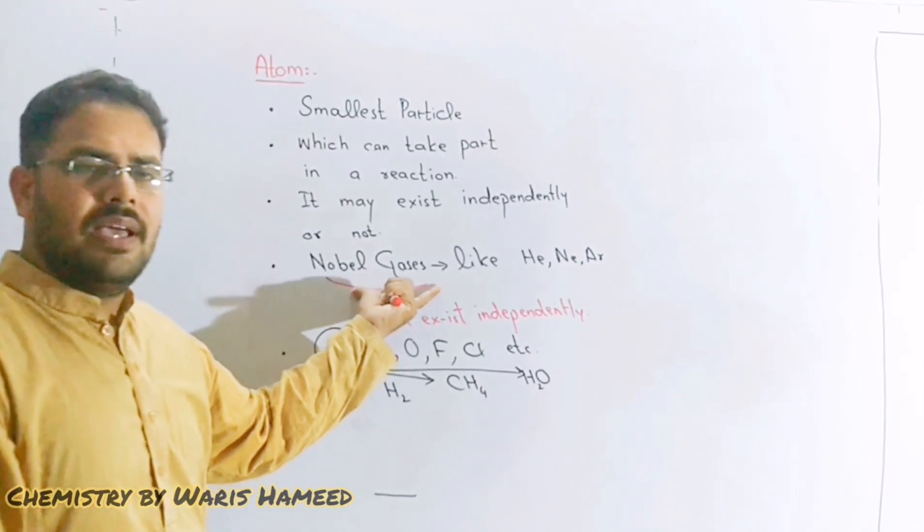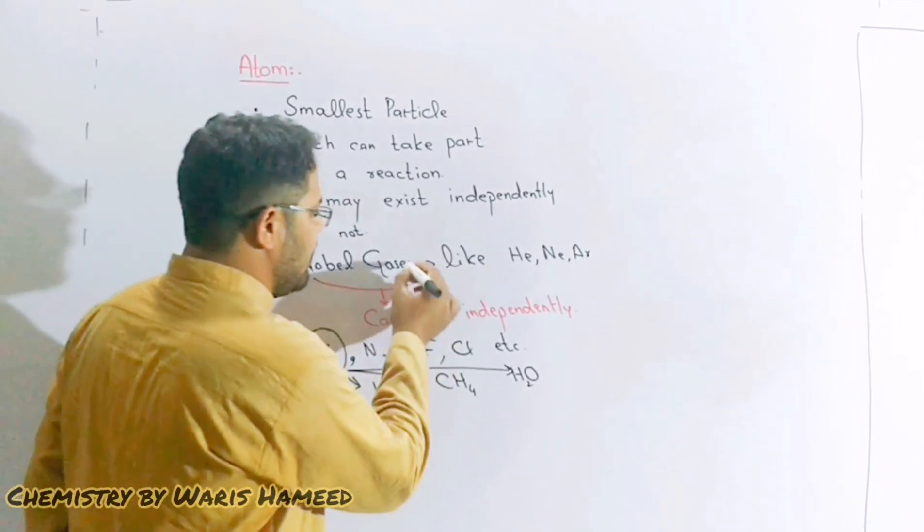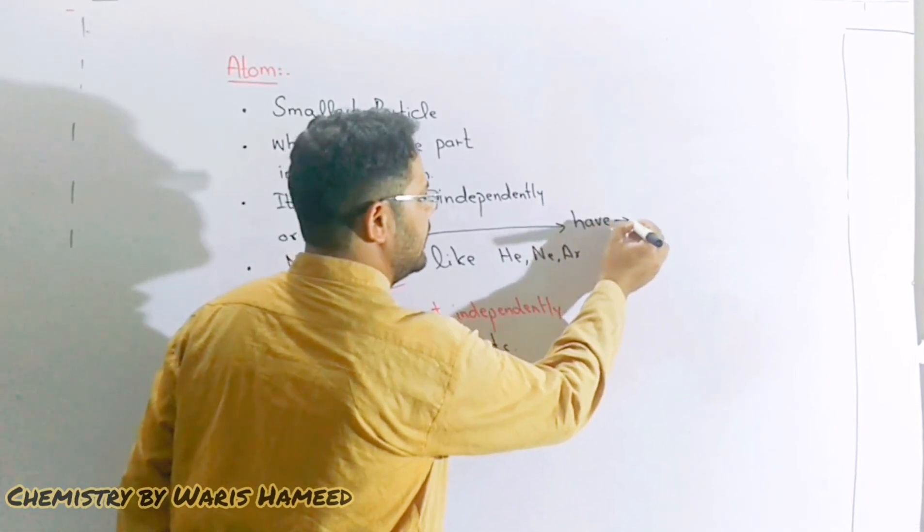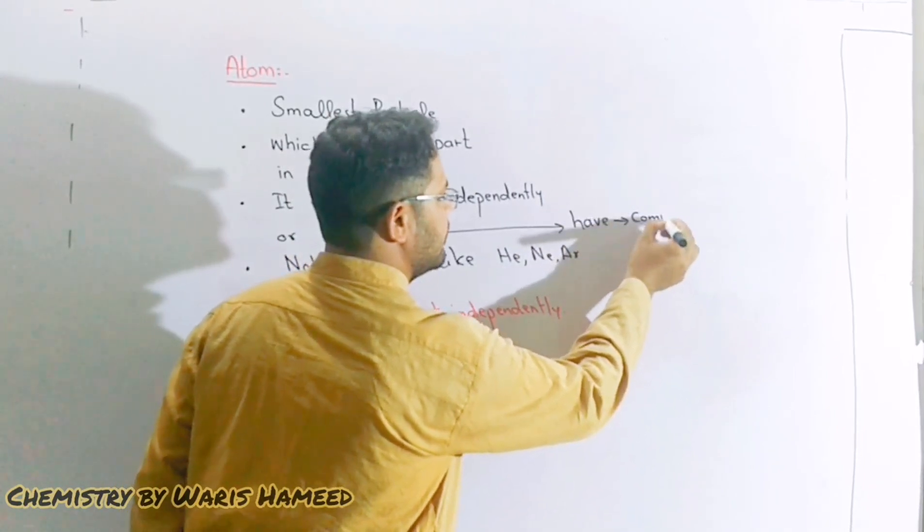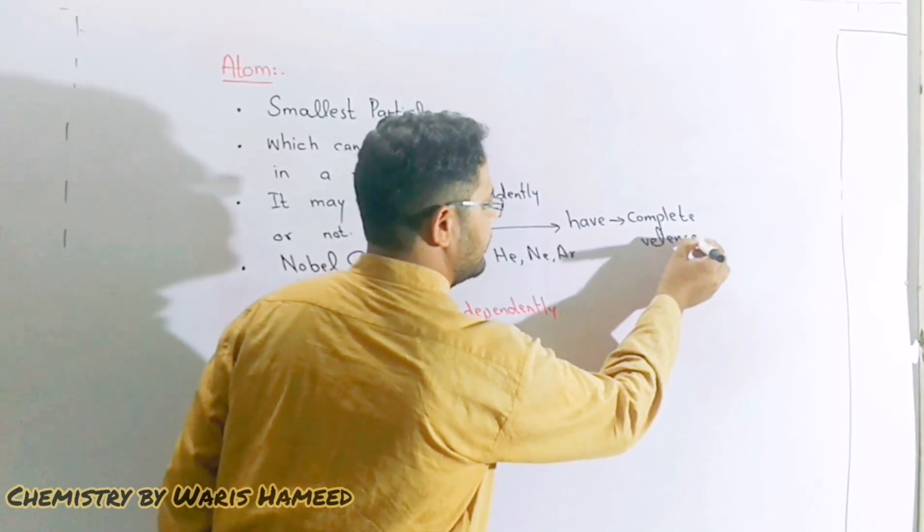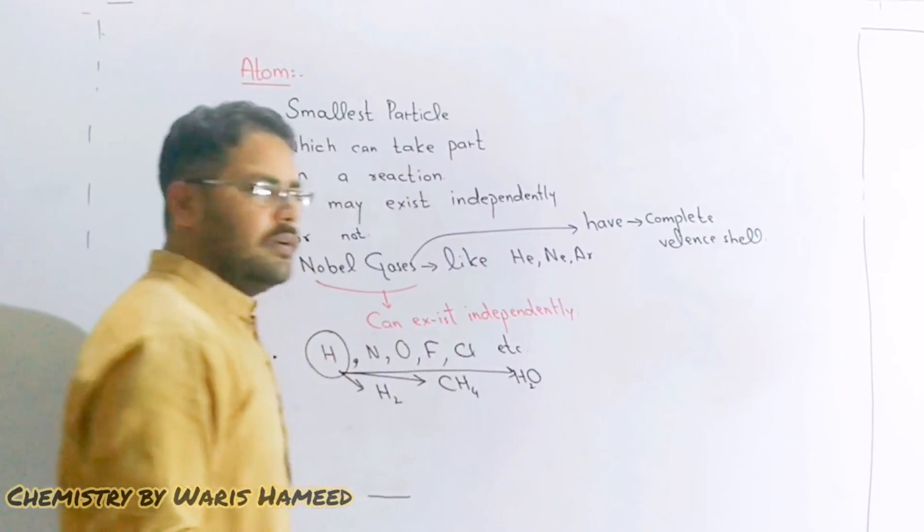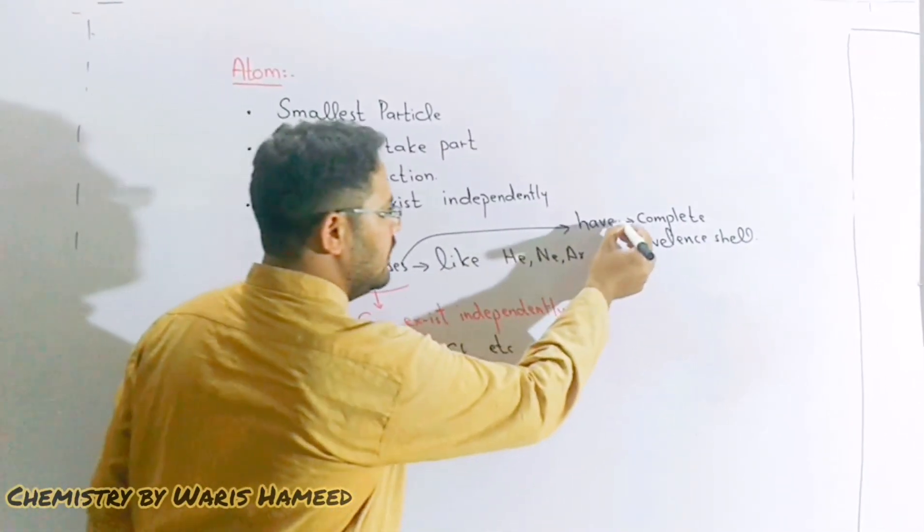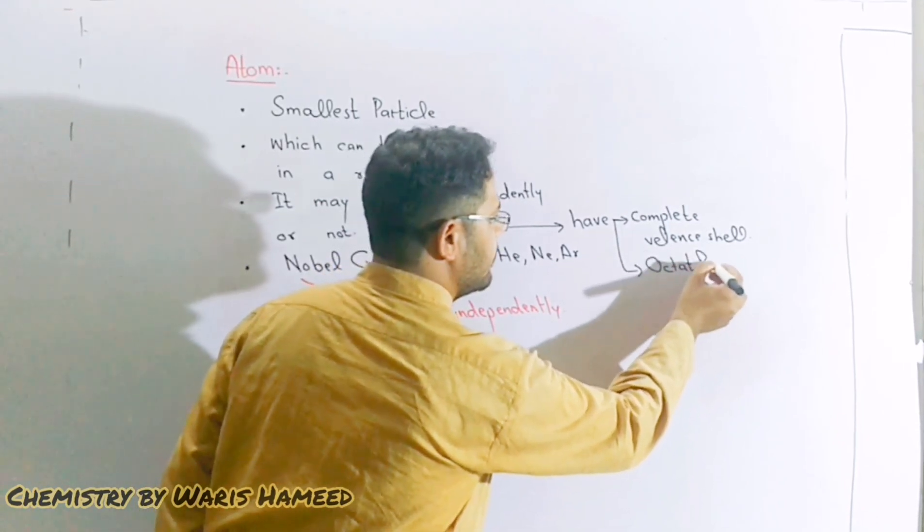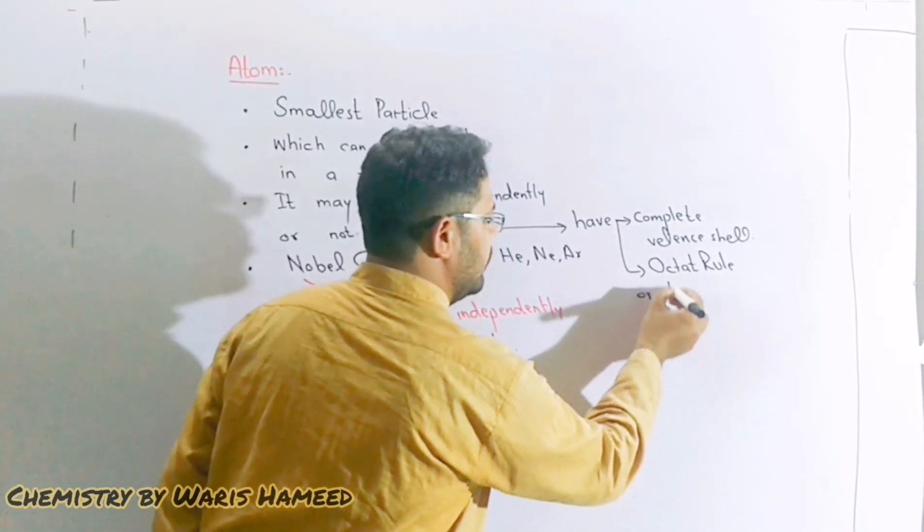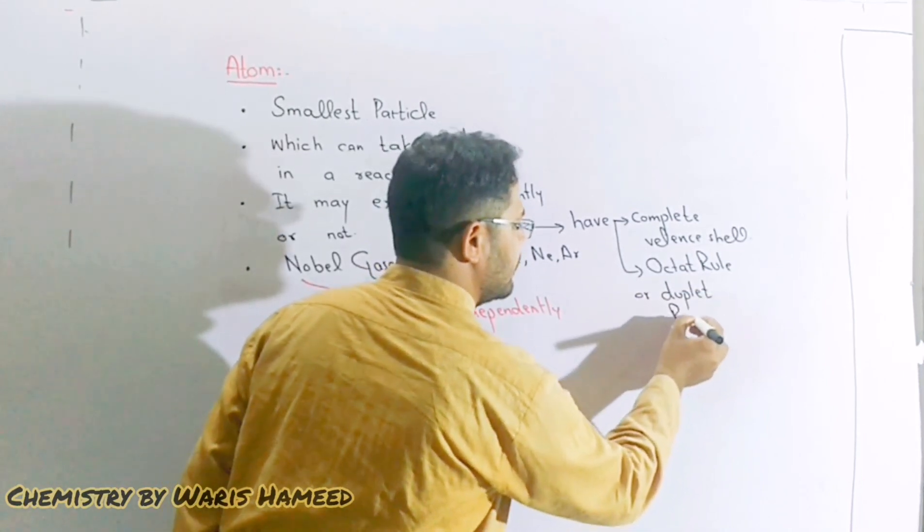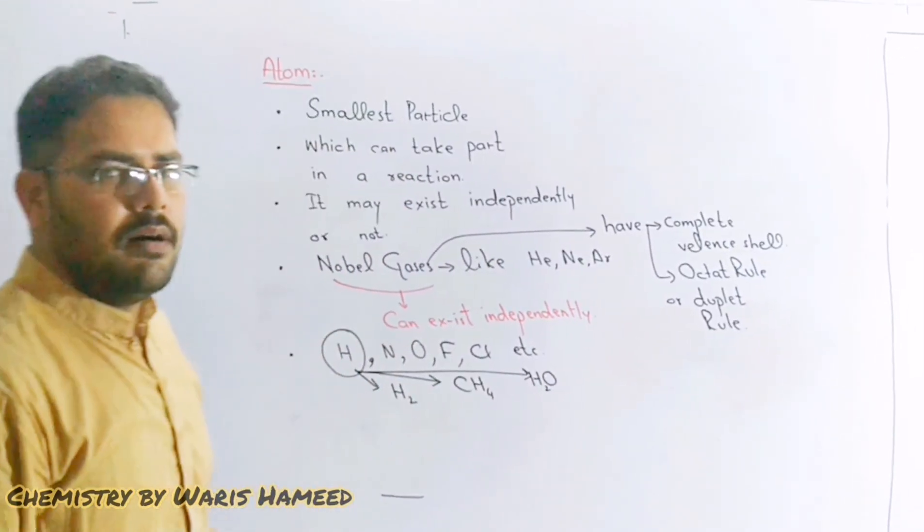Now why noble gases can exist independently? Because noble gases have complete valence shell, or we can say they obey octet rule. So noble gases are stable.